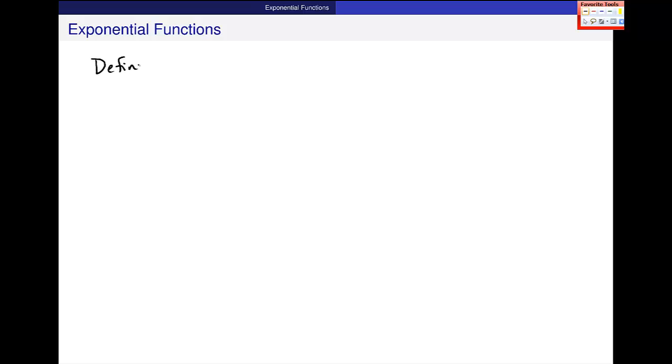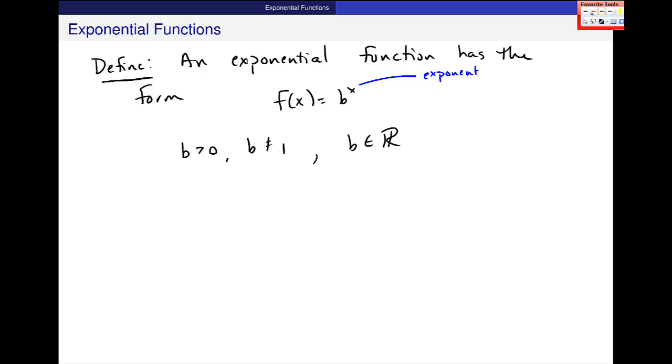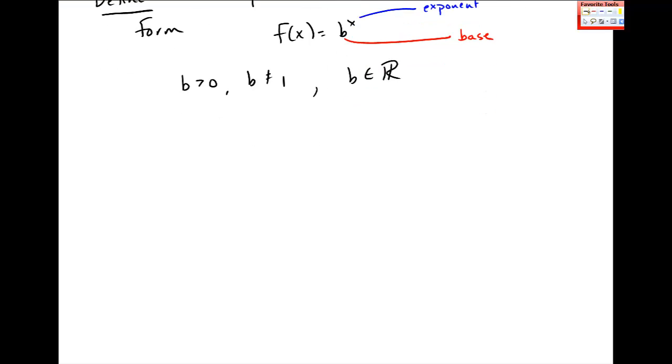So define: an exponential function has this form, f of x is equal to b to the x. b has to be greater than 0 and it can't be 1, and it's a real number, or at least we're looking at real numbers. And in this case, this variable is in the role of the exponent, and right here, this b is called the base of the function.